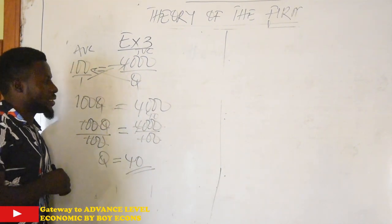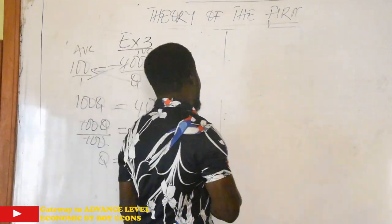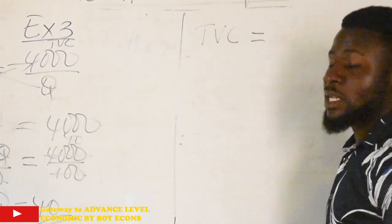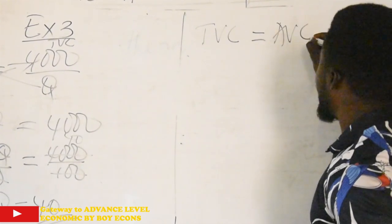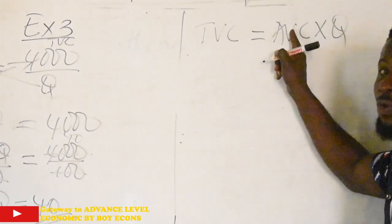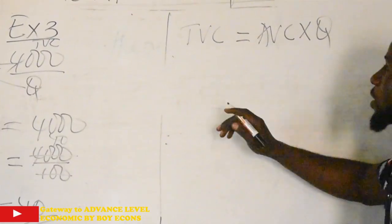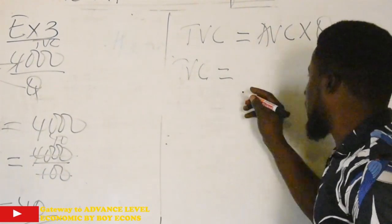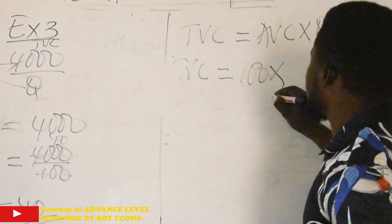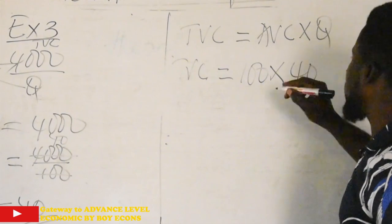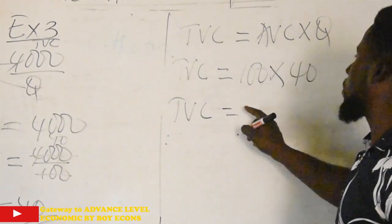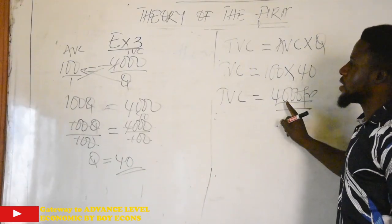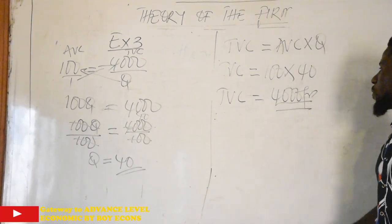We can verify this answer. Total variable cost equals average variable cost times Q, which is 100 × 40 = 4,000 francs. That matches the total variable cost we calculated, so our answer is correct.